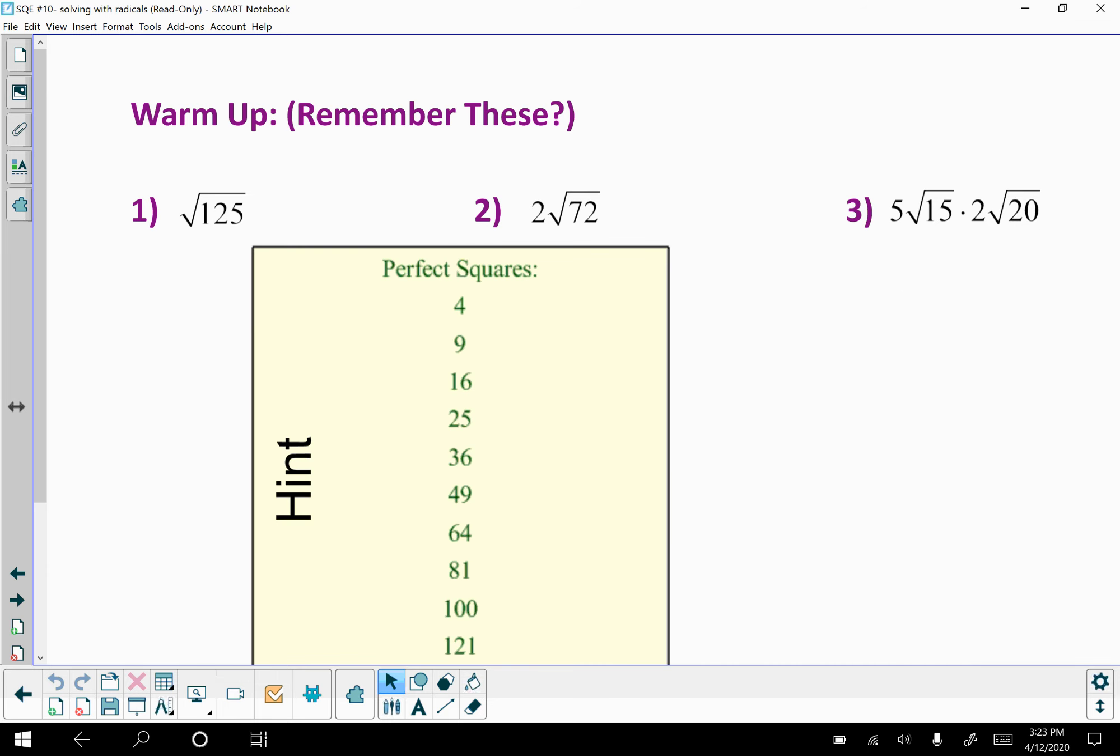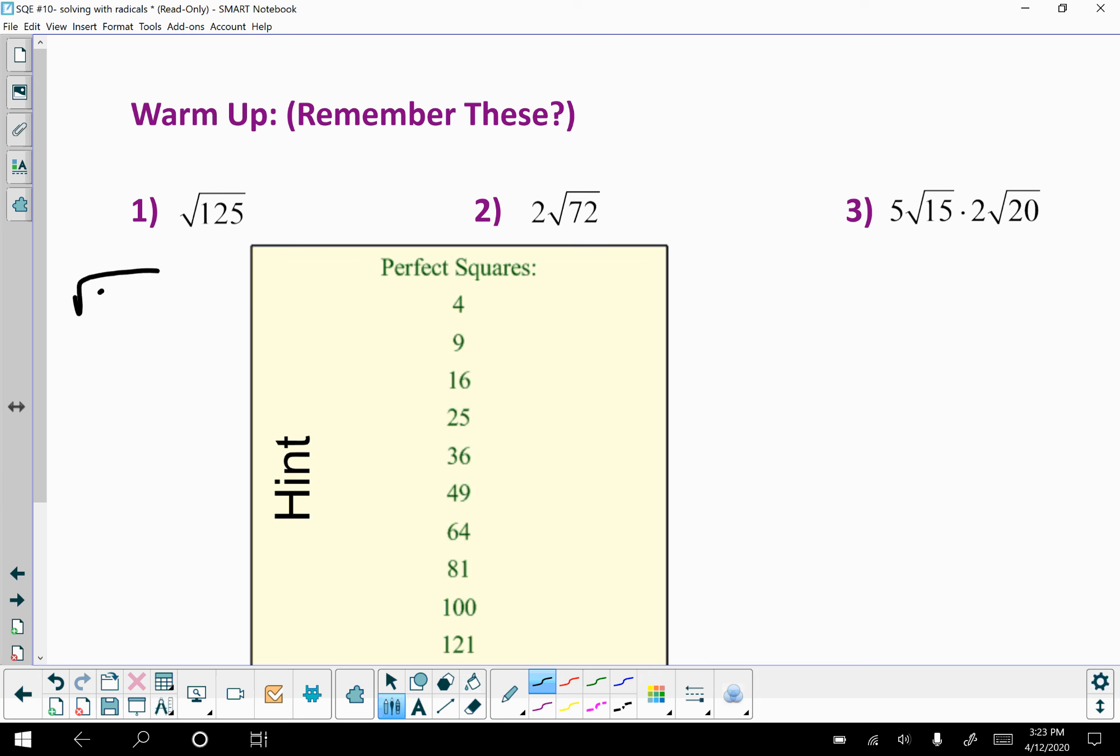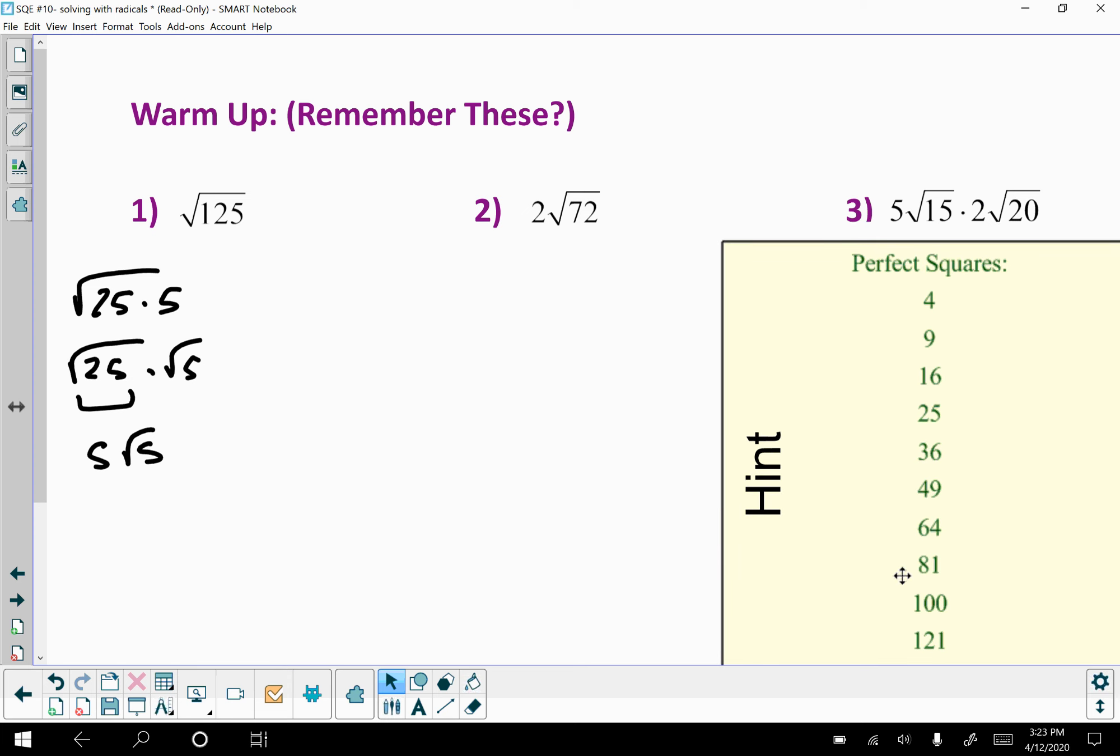So if we look at the √125, it's going to be root 25 times 5, which breaks up to √25 times √5, which square root of 25 is 5, so I get 5√5. Okay, and then when we have √72, 72 falls somewhere here.